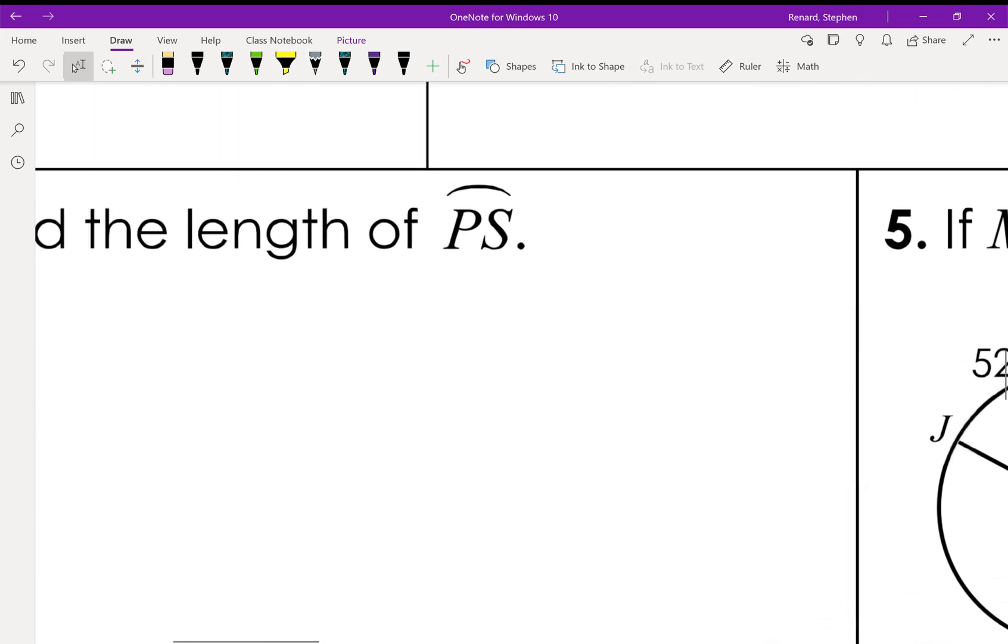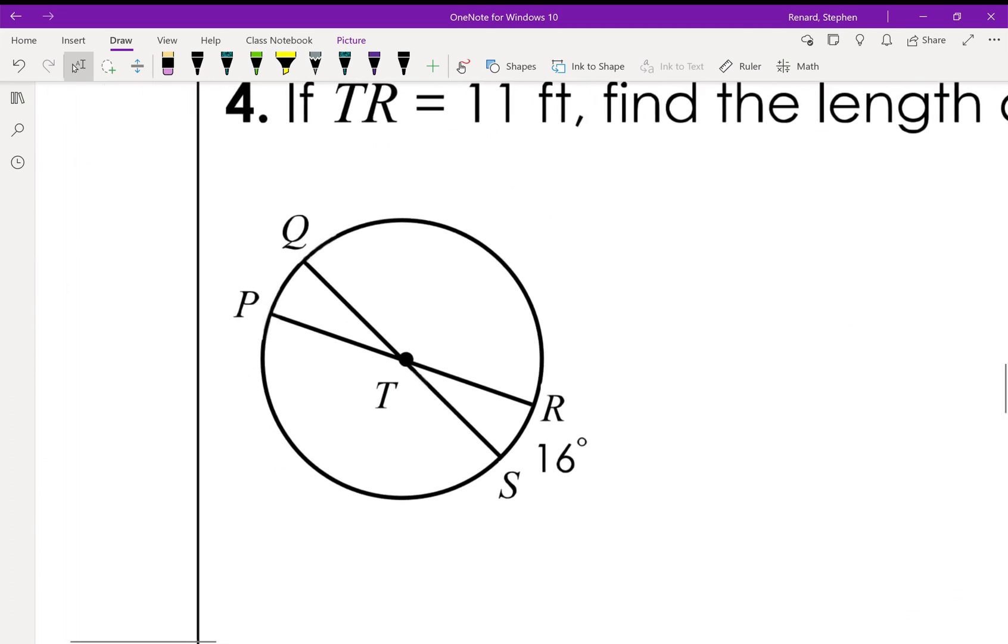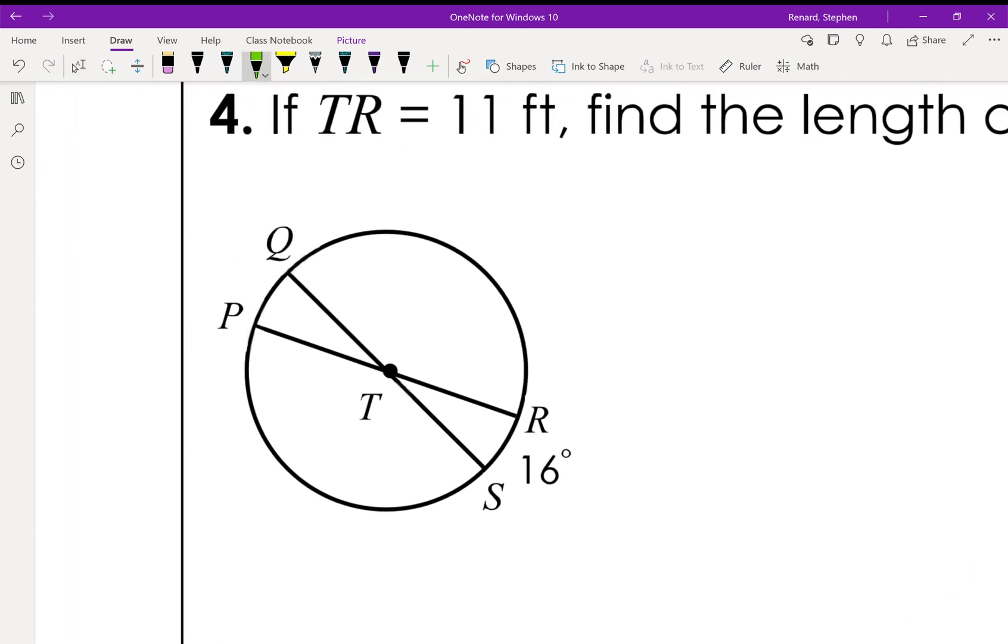Number four. Find the length of PS. So what we're looking for here, it's important to note, is this bit right here. So how do we find that? Well, we know that this is 16 right here, and we know that P to R right there is 180 degrees. So this right here is going to be 180 minus 16, or 164 degrees.